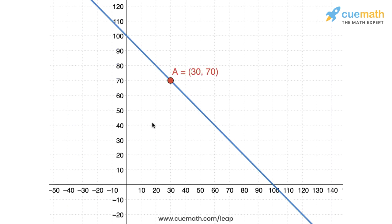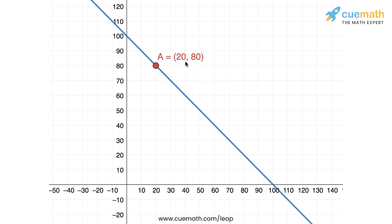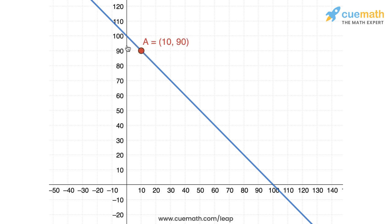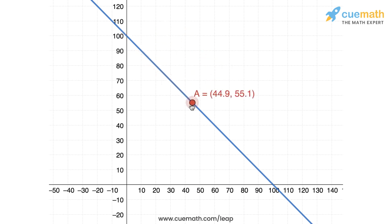Here's a simulation showing the graph of the line X plus Y equal to 100. Point A is at (30, 70), meaning Yamini's contribution is rupees 30 and Fatima's is rupees 70. As I move this point along the line, if I take the point (20, 80), X decreases to 20 but Y increases to 80. At (10, 90), X decreases to 10 and Y increases to 90. At (0, 100), Yamini's contribution is 0 and Fatima's is 100. Moving the other way, X increases while Y decreases.